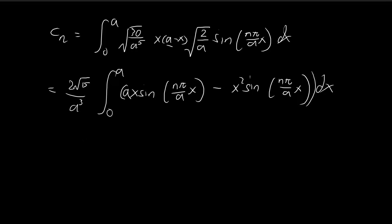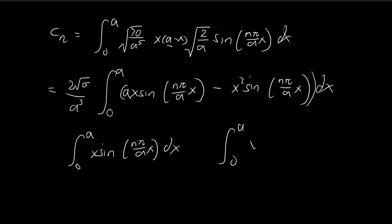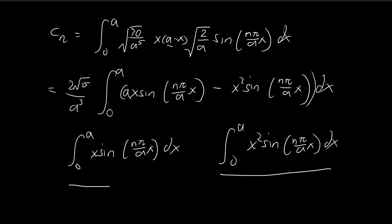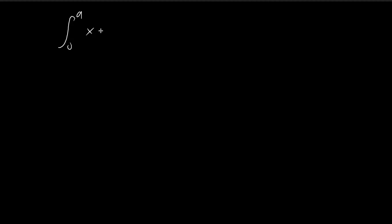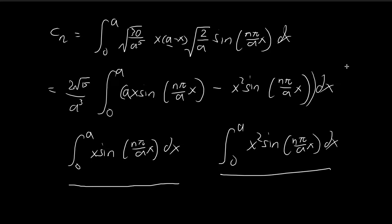We can see there are two integrals to solve: the integral of x·sine(n pi x/a) dx, and the integral of x²·sine(n pi x/a) dx. We need to solve both of these. If you're lazy, you can look these up, but let's try to solve them. We'll focus on the first one, and once we have the result, substitute it back into the full expression.